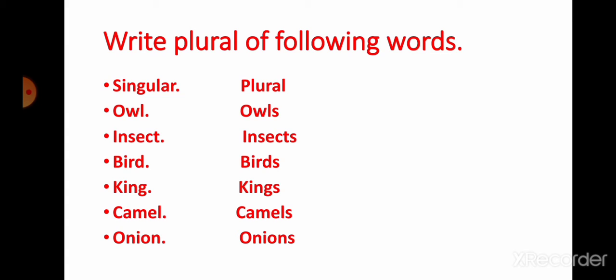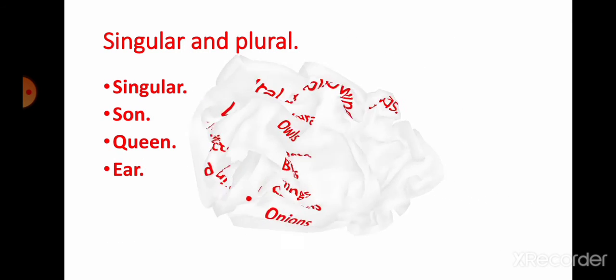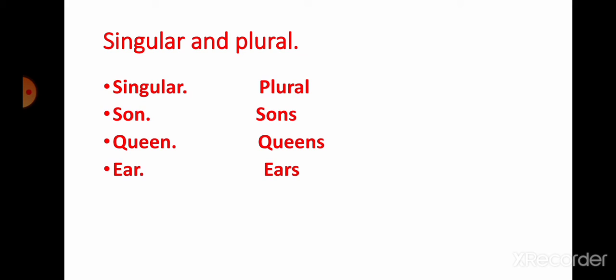Singular, plural. Owl, owls. Insect, insects. Bird, birds. King, kings. Camel, camels. Onion, onions. Next word is son, sons. Queen, queens.